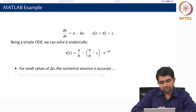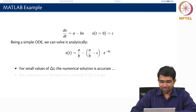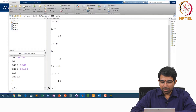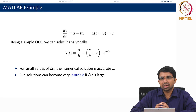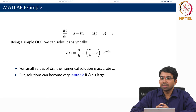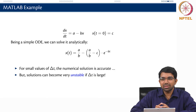For small values of delta t, the numerical solution is accurate. What counts as small? You do not know — you have to see what happens. But solutions can become very unstable if delta t is large. We will look at stability again in the next couple of classes.